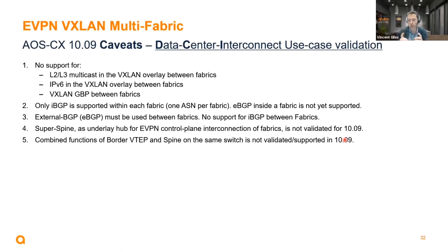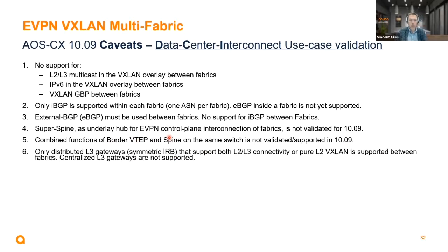What was shown in the example was a combination of underlay circuits and the spine function, which is different. This solution is targeted for symmetric IRB distributed L3 gateway, supporting both L2 and L3 connectivity, but pure L2 VNI / L2 VXLAN between fabrics is also possible. There is no support for centralized layer 3.